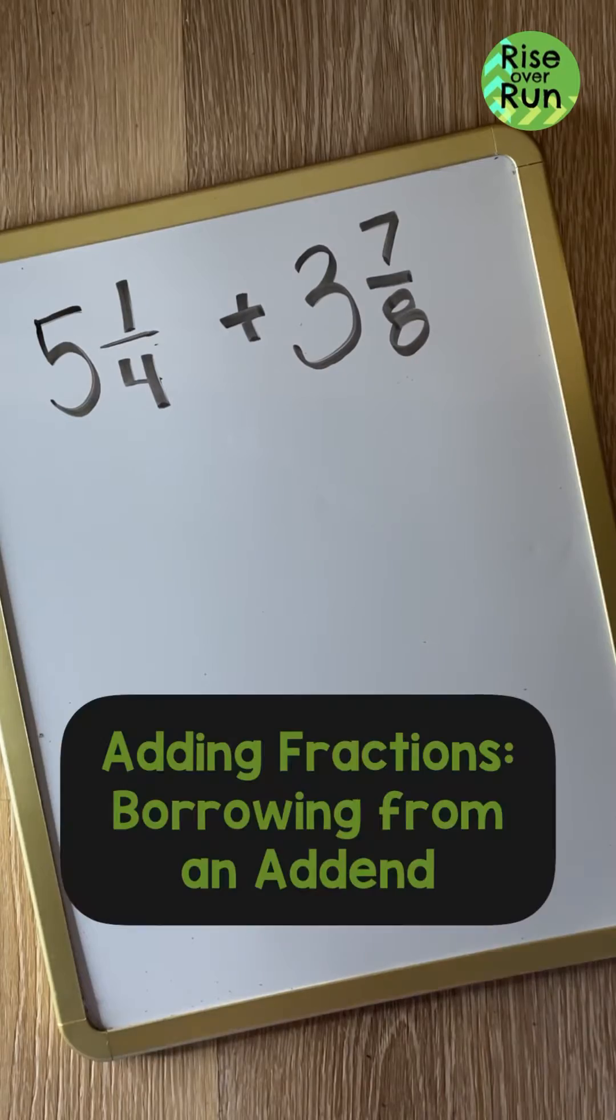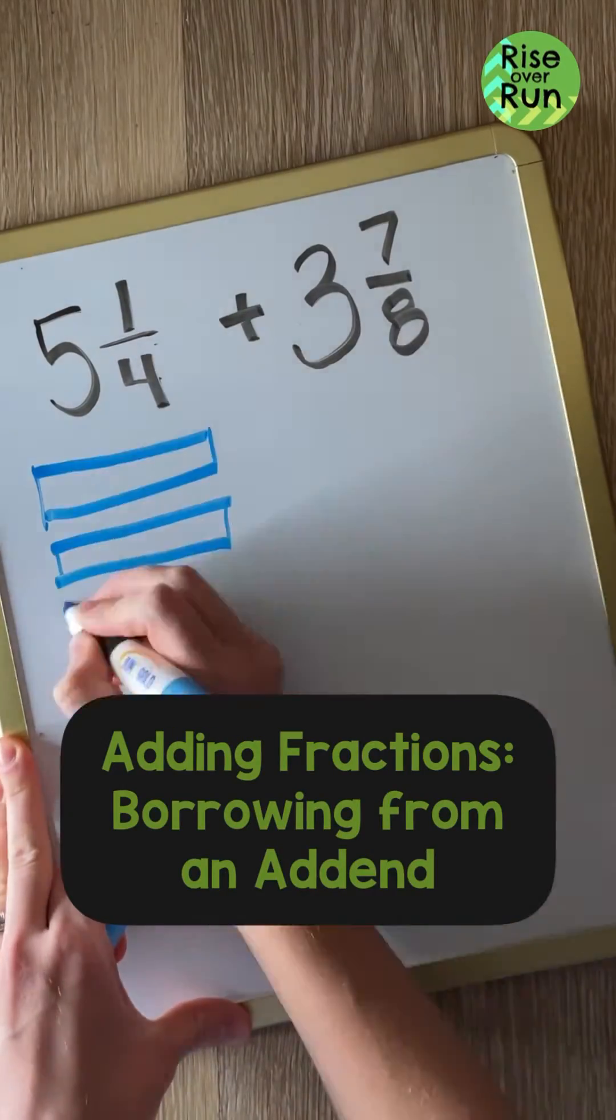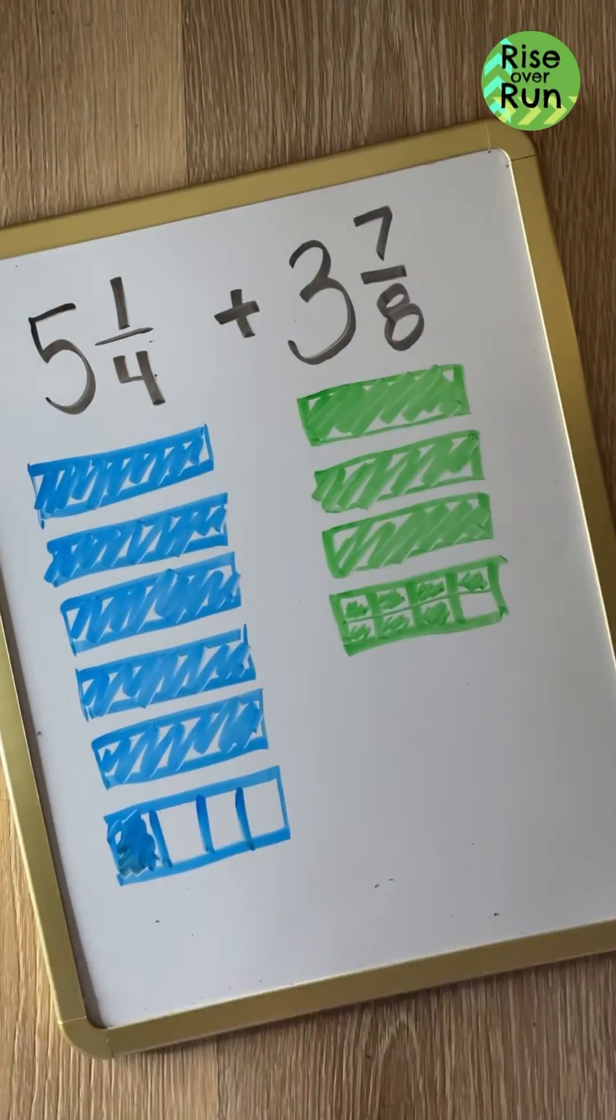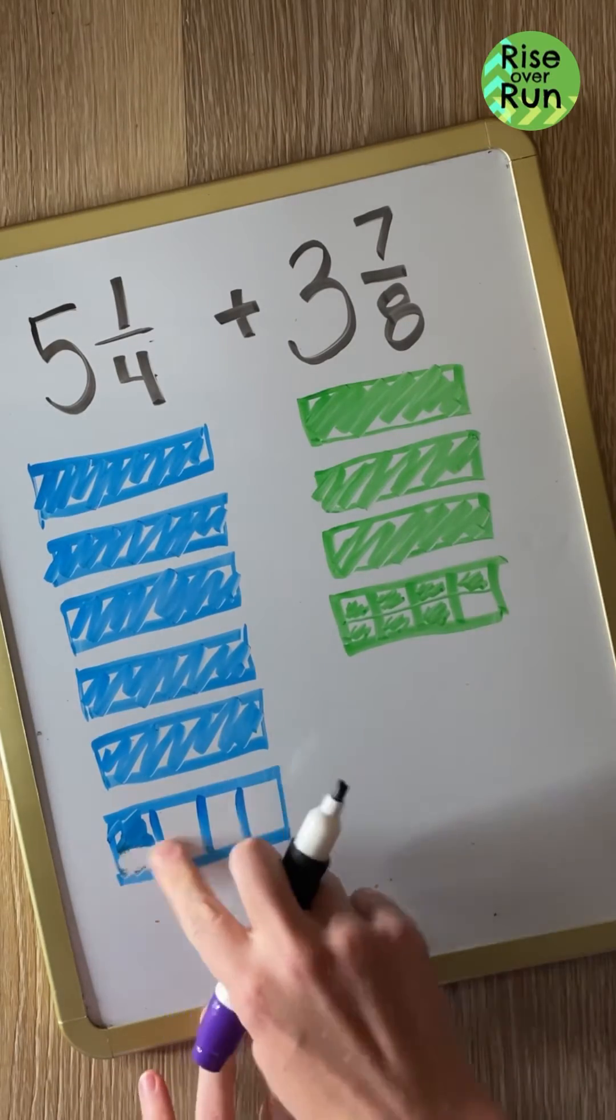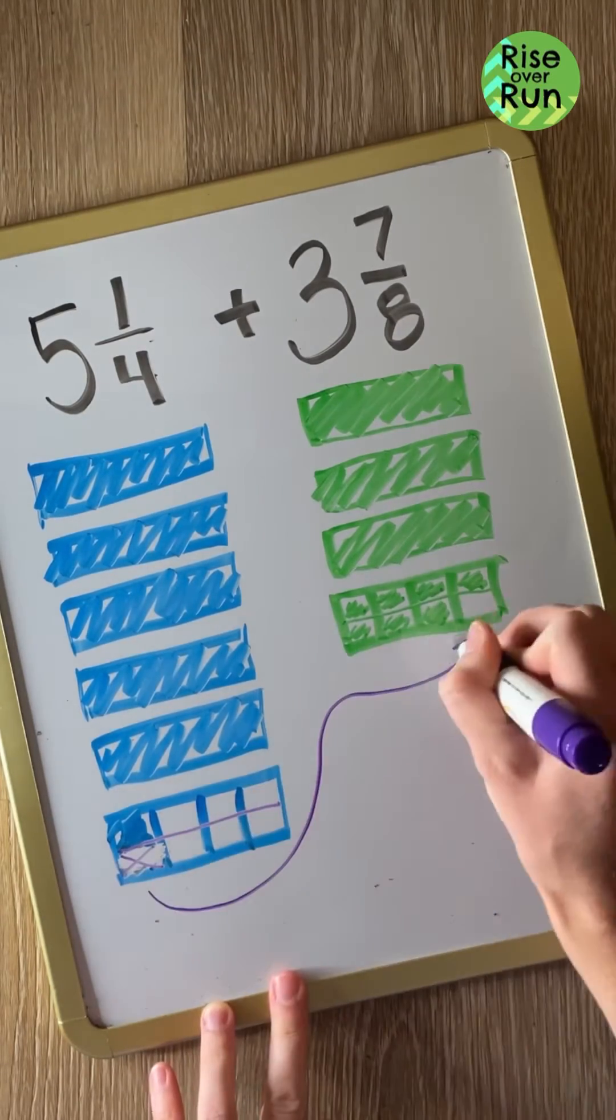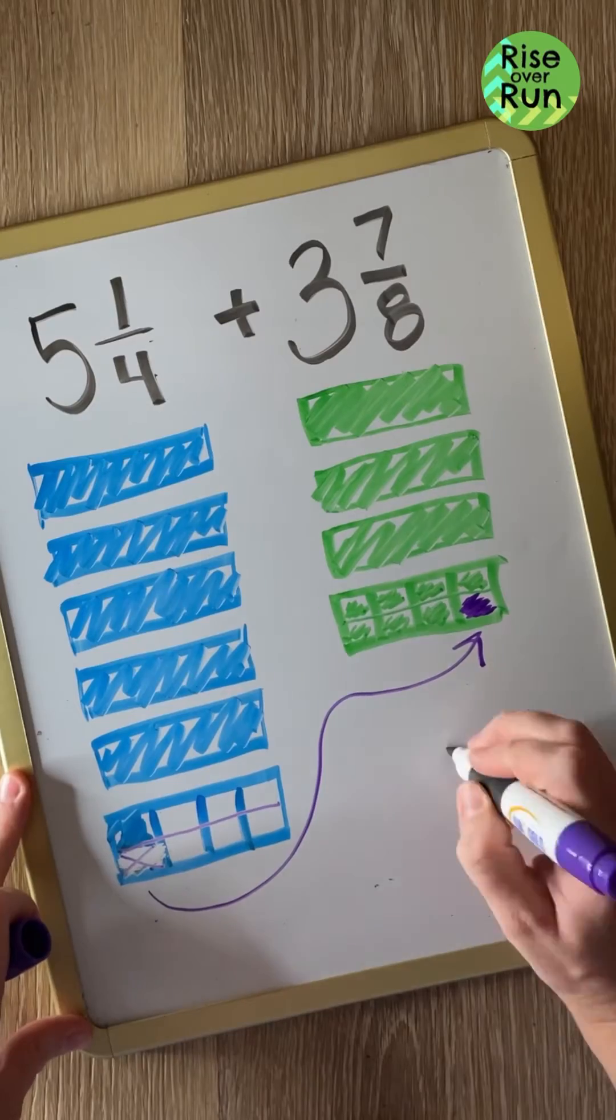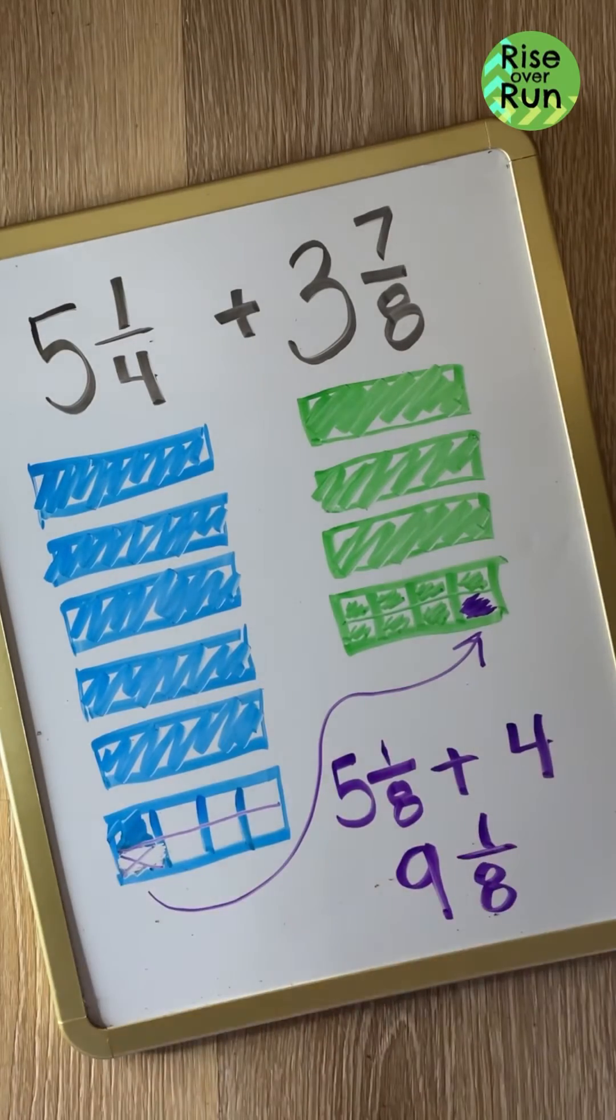First, fractions. 5 1/4 plus 3 7/8. I'm going to use the strategy of borrowing from one addend to make the other one a little friendlier. So I'm going to borrow 1/8 here to make this into 4. And then I'll need to add 5 1/8 plus 4 to get 9 1/8.